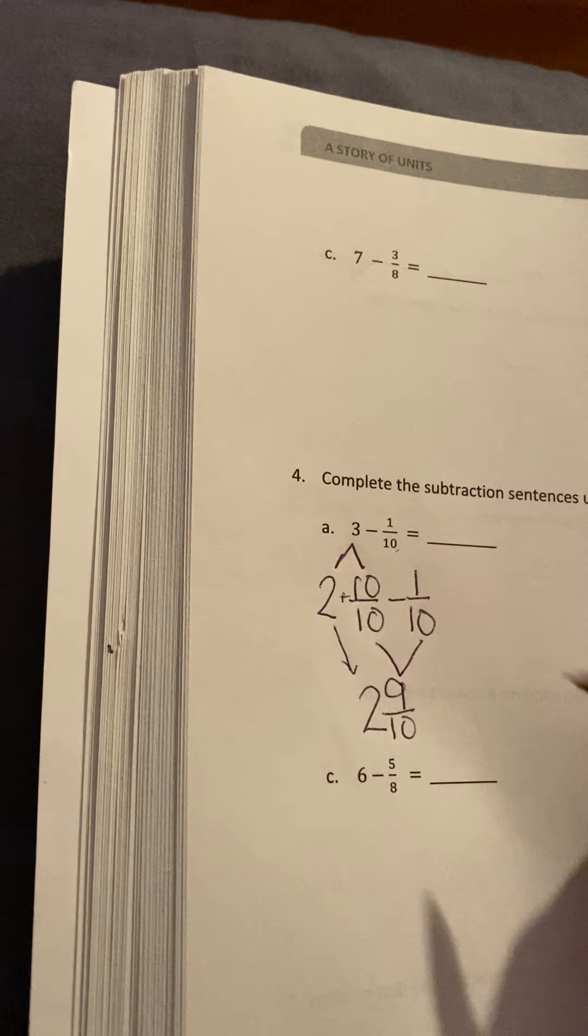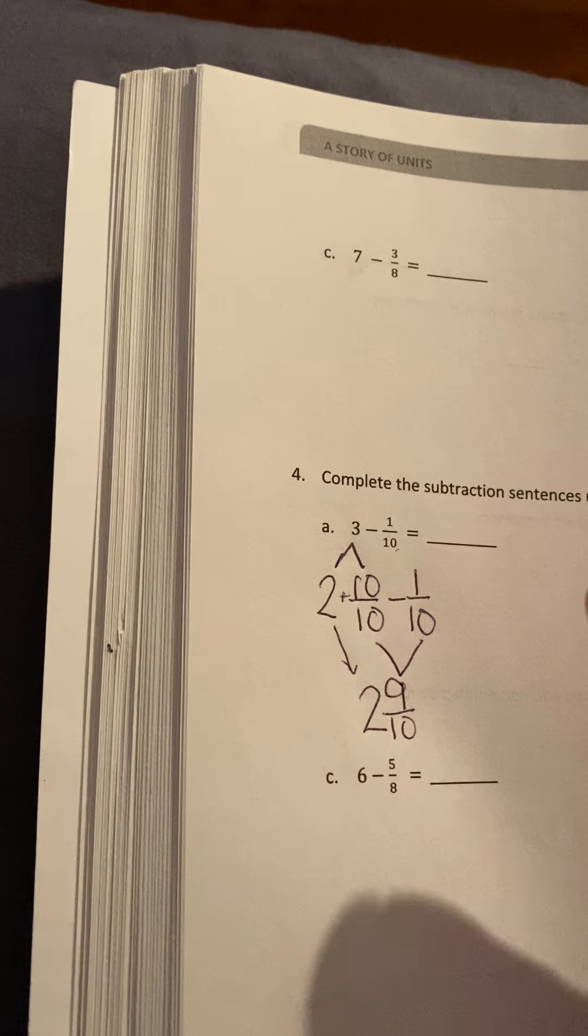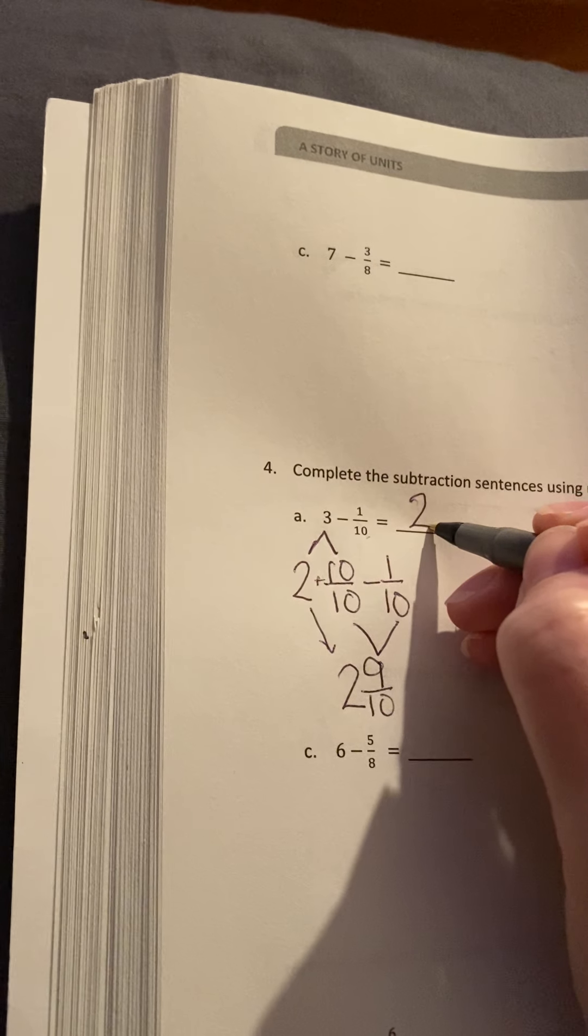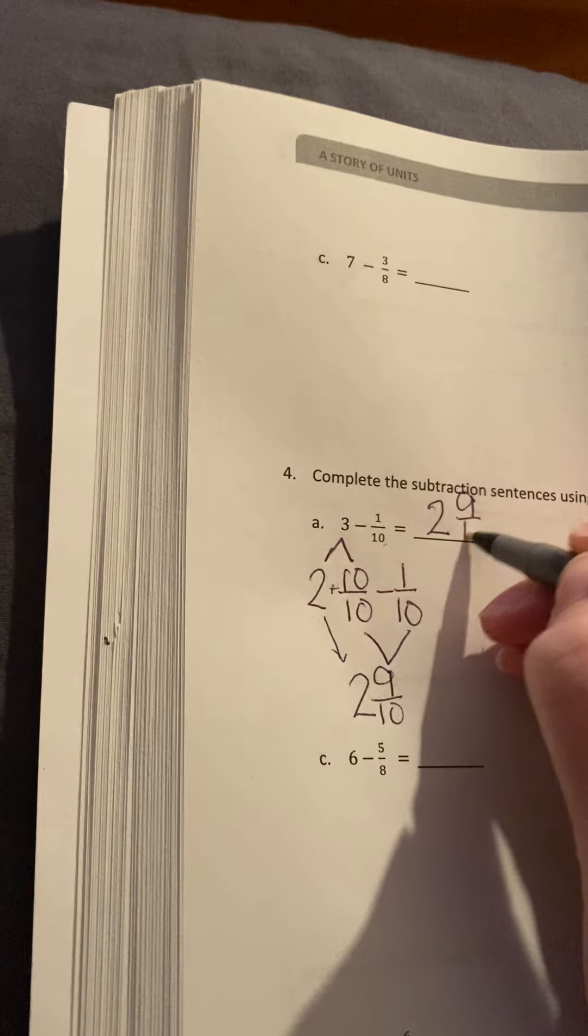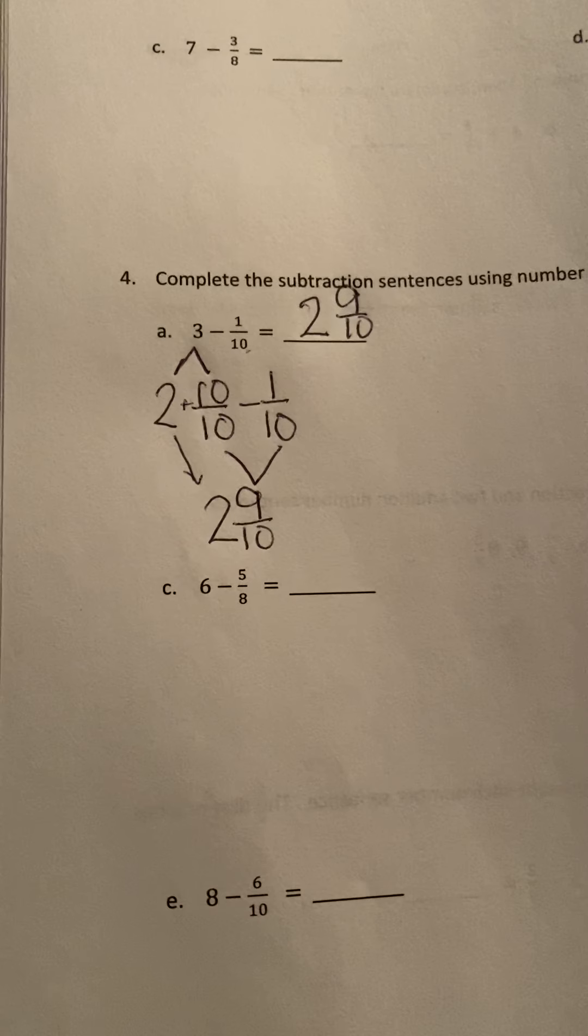And I have 2 wholes. I'm just going to put that right next to it because remember when we have a plus in between, we could just take that plus out and put it together. So I have a final answer of 2 wholes and 9 tenths. All right, let's look at another one.